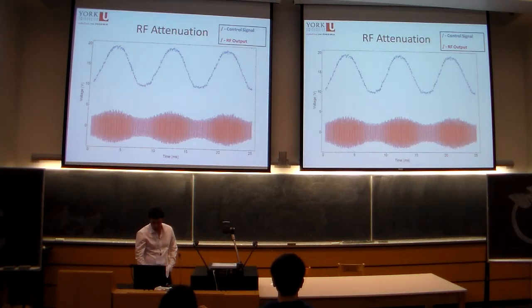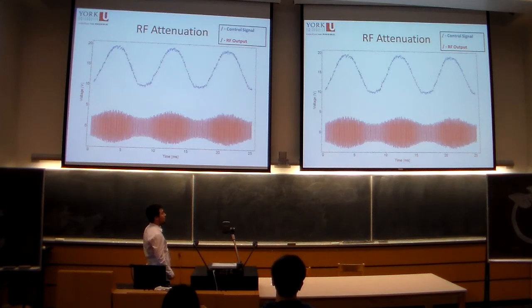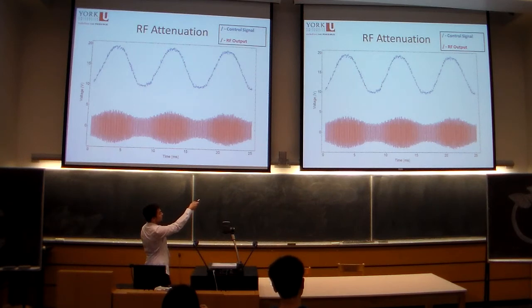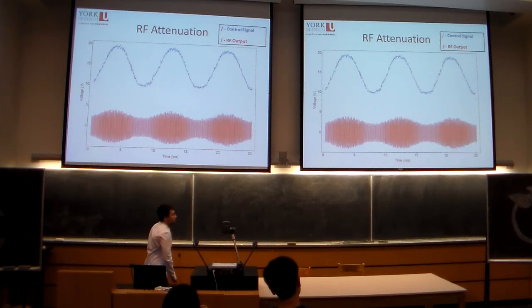Just to illustrate this, this is a trace of what happens with some given control voltage. I use a sinusoid because it matches the last set of slides. When the control voltage is high, no attenuation, and when it's low, then we have lots of attenuation.